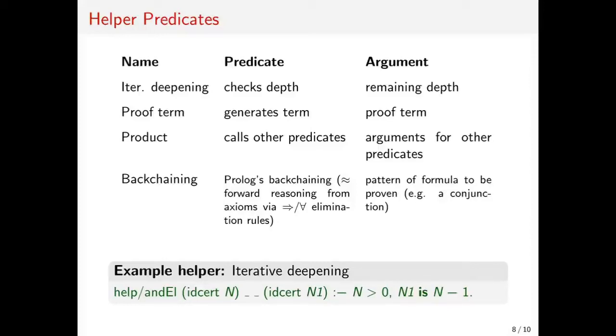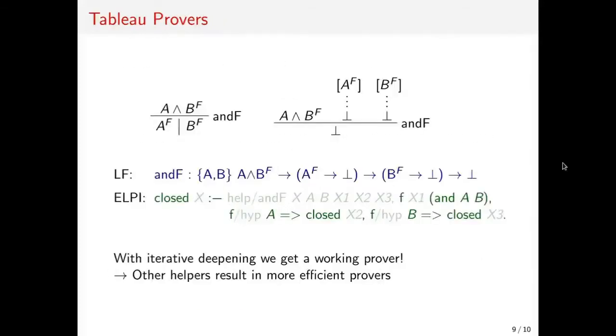With all this we can now generate a working prover from a natural deduction calculus specified in MMT, for example for first order logic. So far we've only talked about natural deduction calculi. I'm finishing my Master's thesis right now in the area of natural language semantics, and there I care more about tableau calculi, so I thought let's give this a try as well. So here we have one of the rules: if we have A and B marked as false, we can split into two branches, one with A marked as false, one with B marked as false, and then we just have to close both of them.